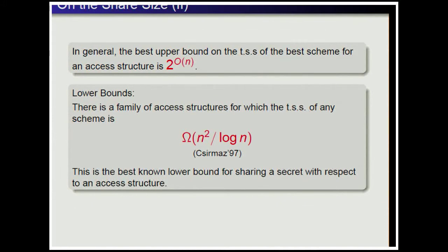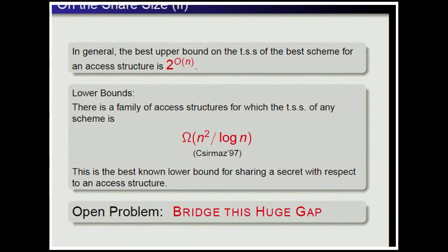We also have some lower bounds. Sirmas proved that there is a family of access structures for which the total share size of any scheme is big-Omega of N squared divided by log N. This is the best known lower bound. So there is a huge gap between the upper and lower bounds on total share size, and one of the main open problems in secret sharing is to bridge this gap.